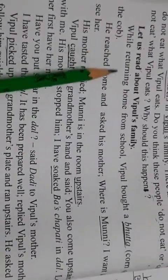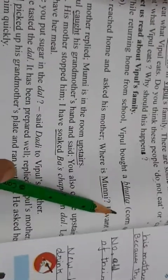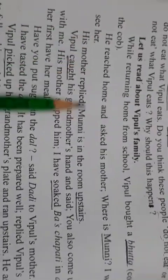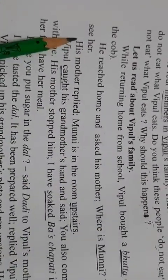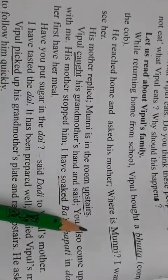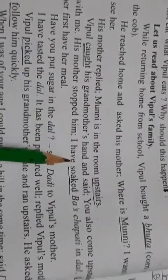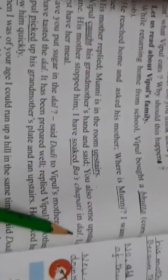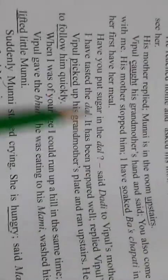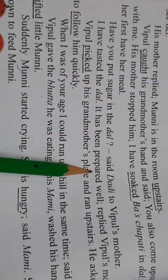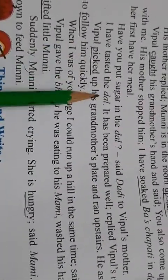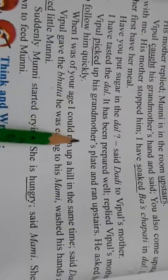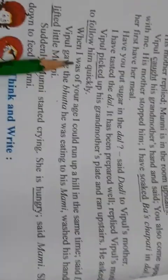Now let us read about Vipul's family. While returning from school, Vipul bought a bhutta — jo makkai hum bolte na, seka hua bhutta. He reached home and asked his mother, where is Munni? I want to see her. His mother replied, Munni is in the room upstairs. Vipul caught his grandmother's hand and said, you also come upstairs with me. His mother stopped him: I have soaked bas chapati in dal, let her first have her meal. Have you put sugar in the dal? said dadi to Vipul's mother. I have tasted the dal, it has been prepared well, replied Vipul's mother. Vipul picked up his grandmother's plate and ran upstairs, asking her to follow him quickly.